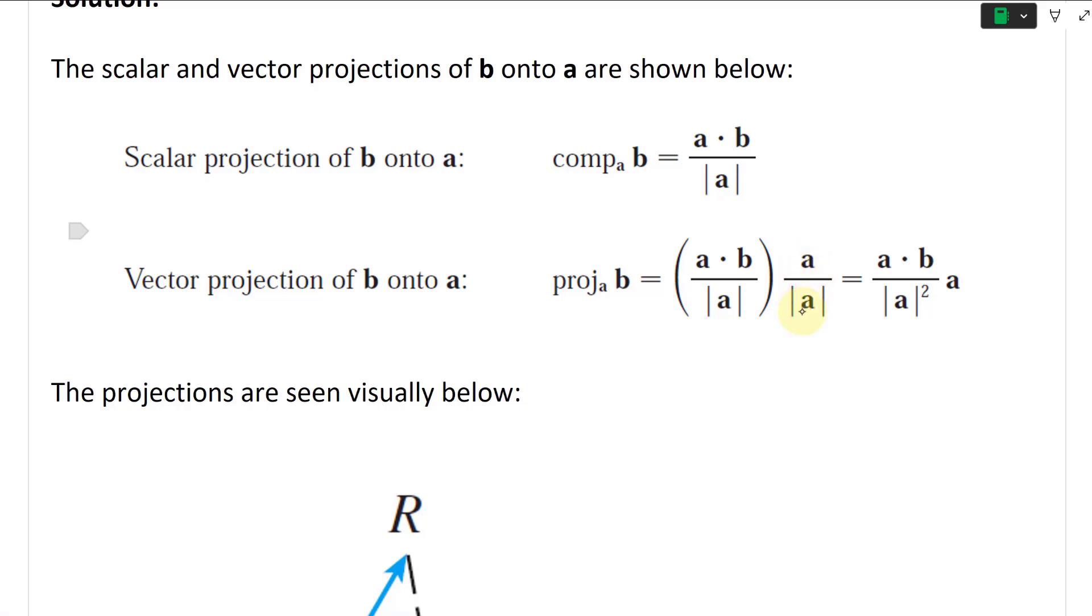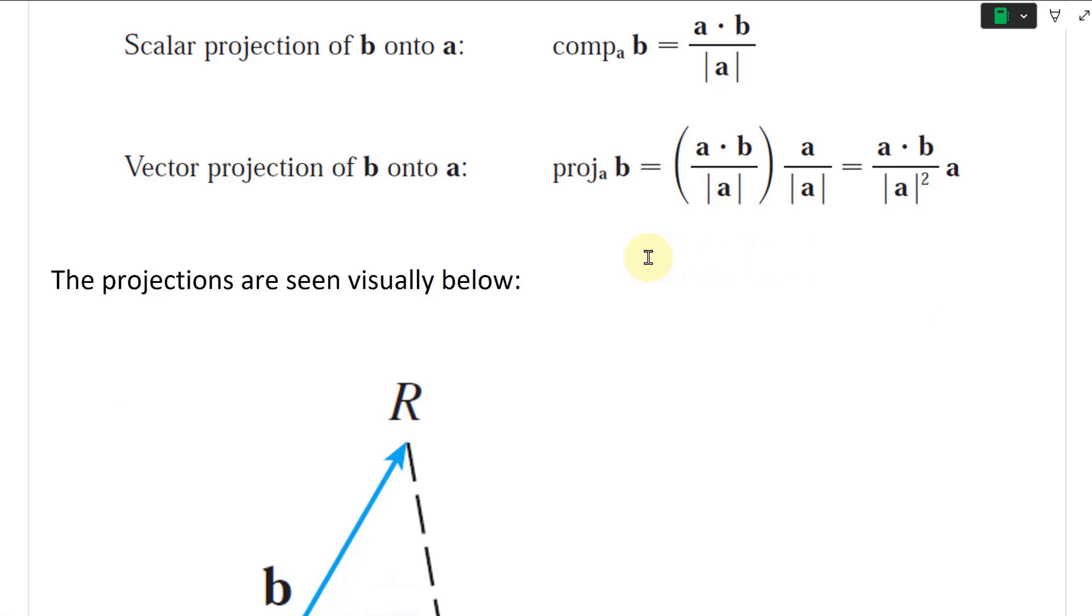So A vector divided by the length of A, which equals A dot B divided by the length of A squared, times A vector.